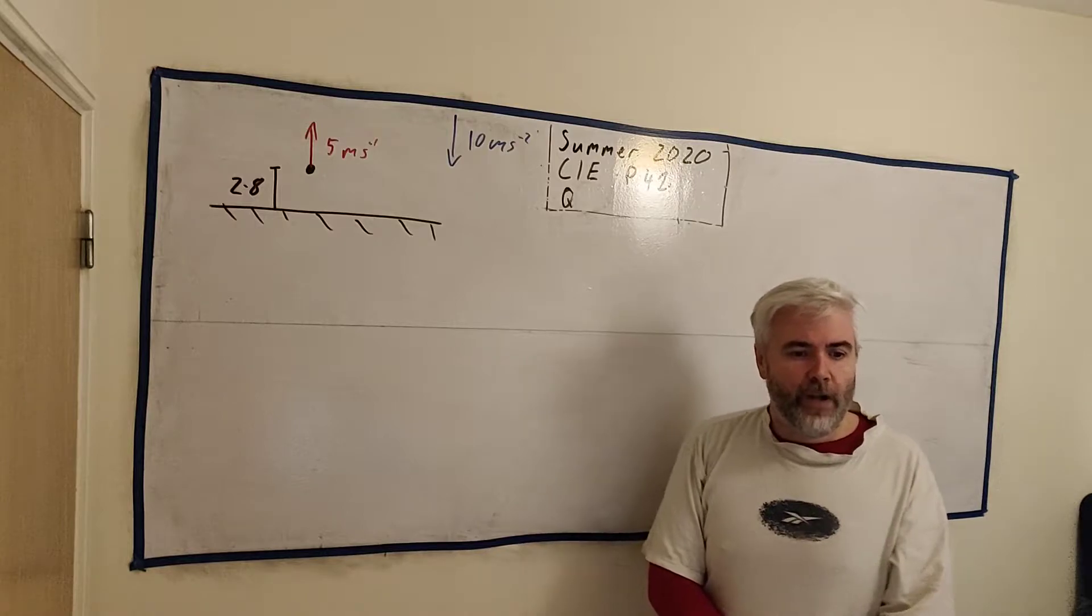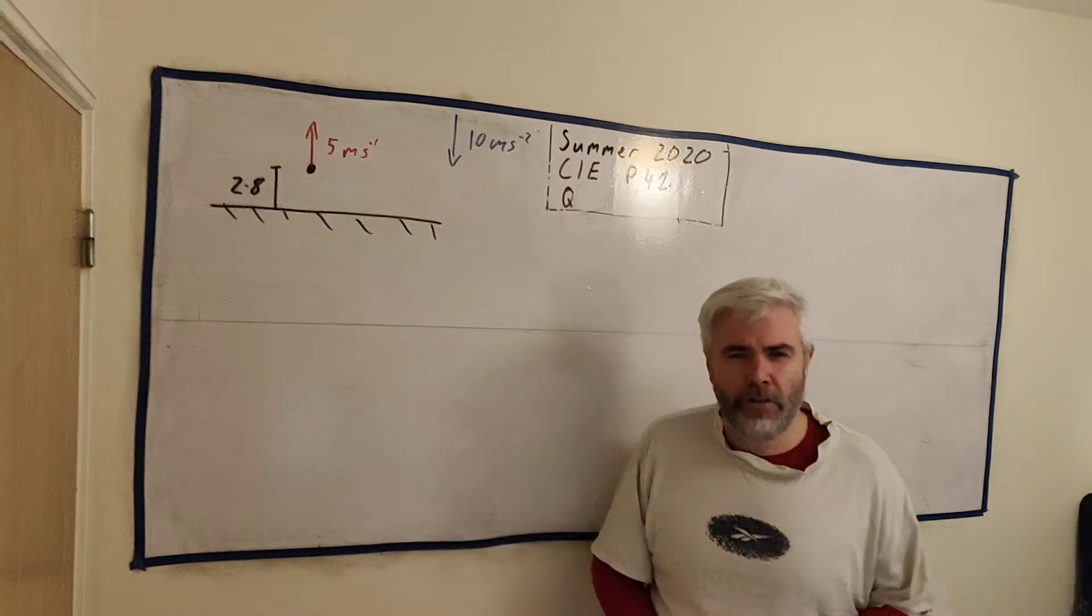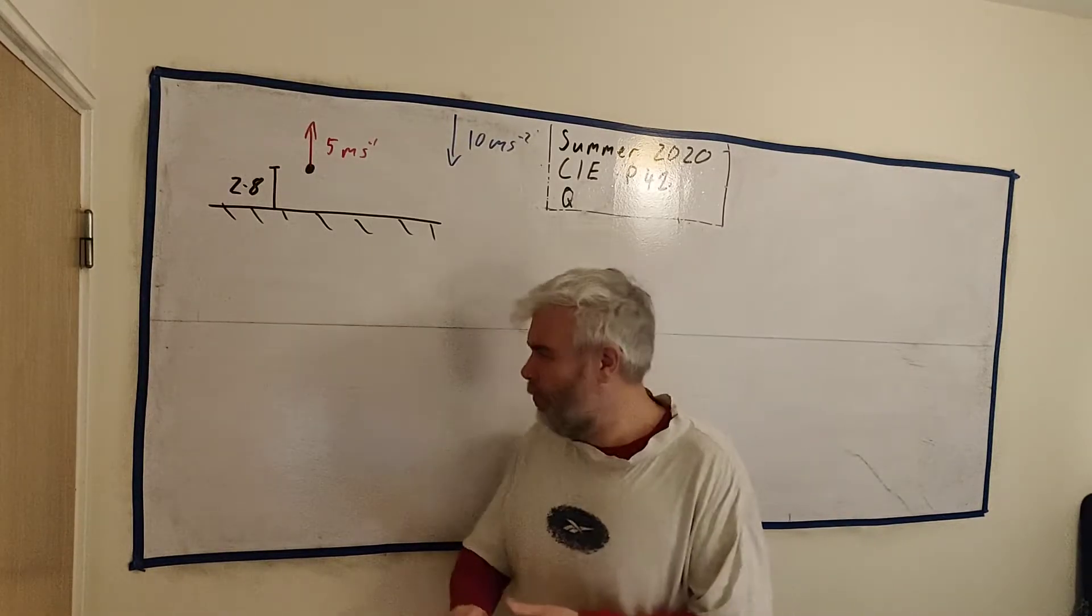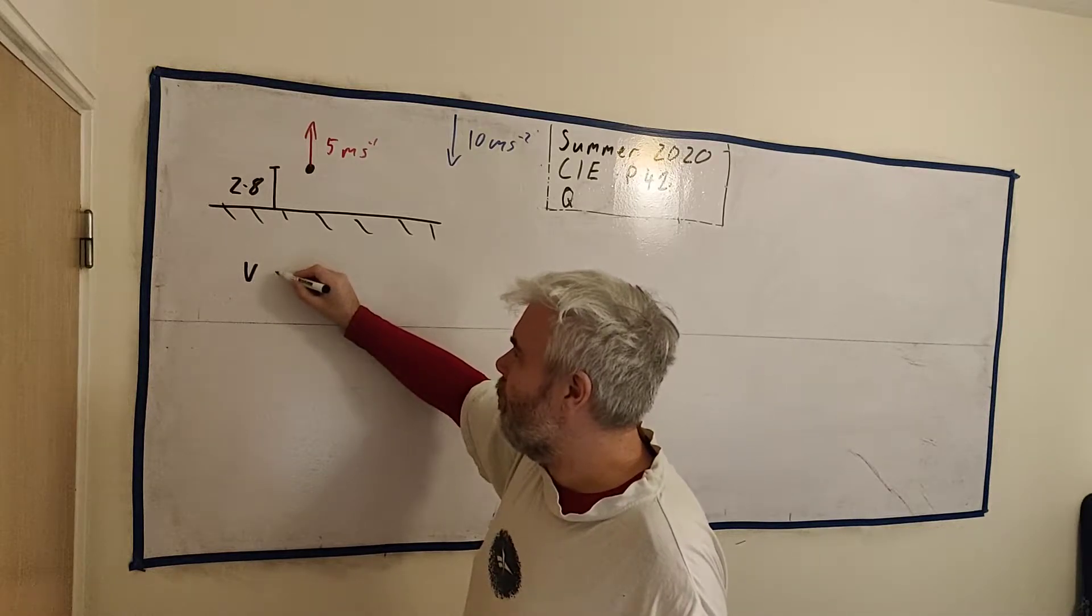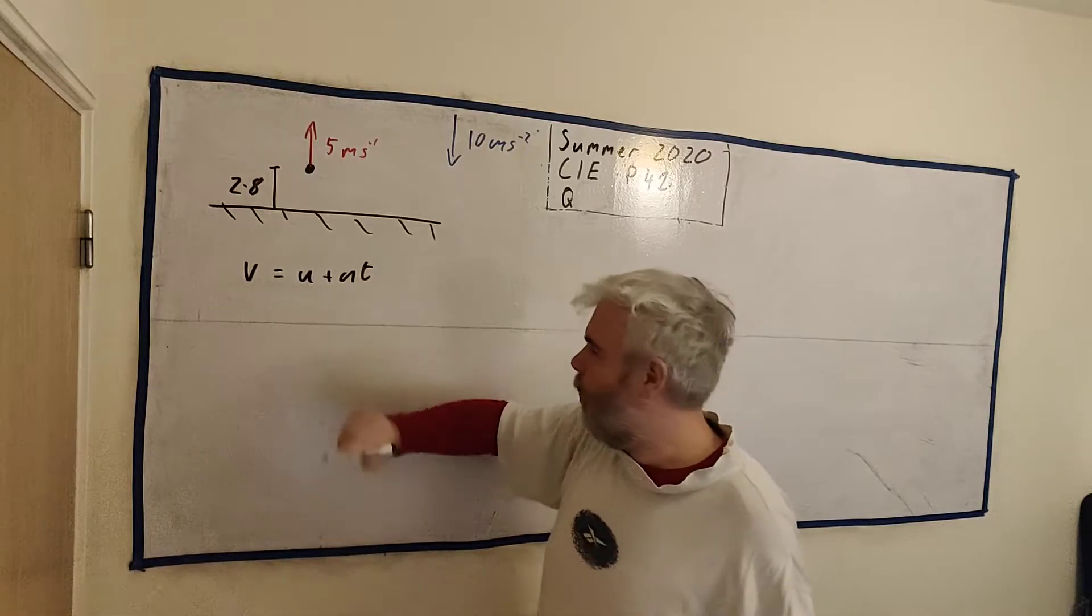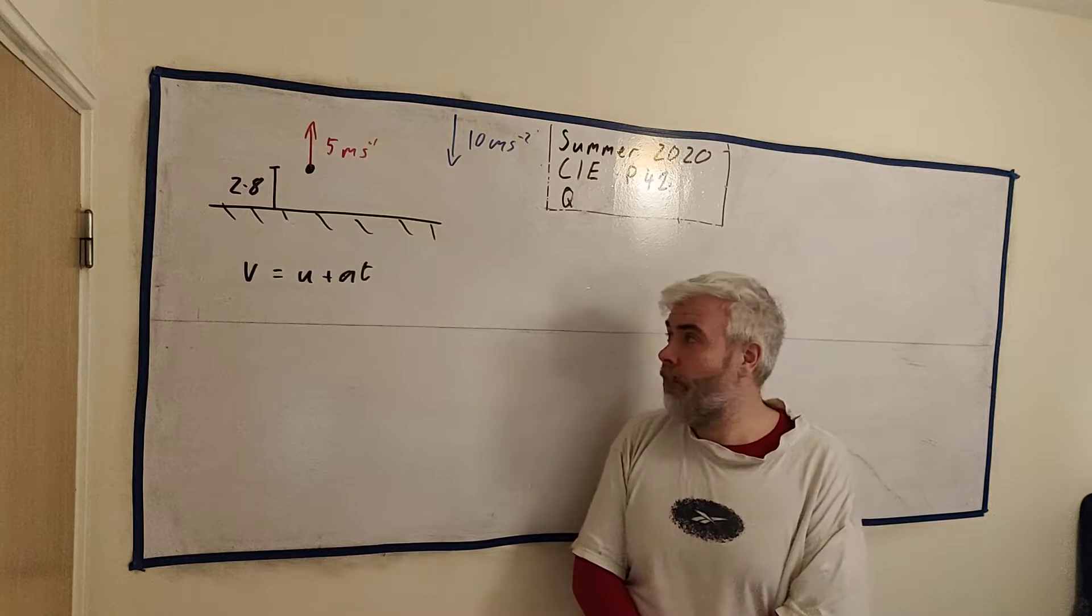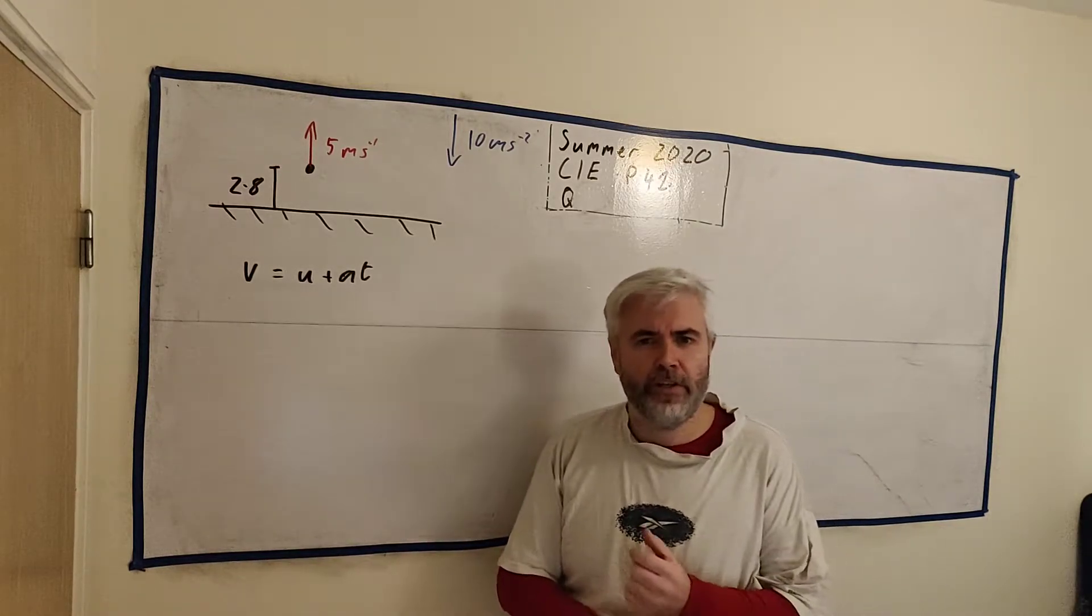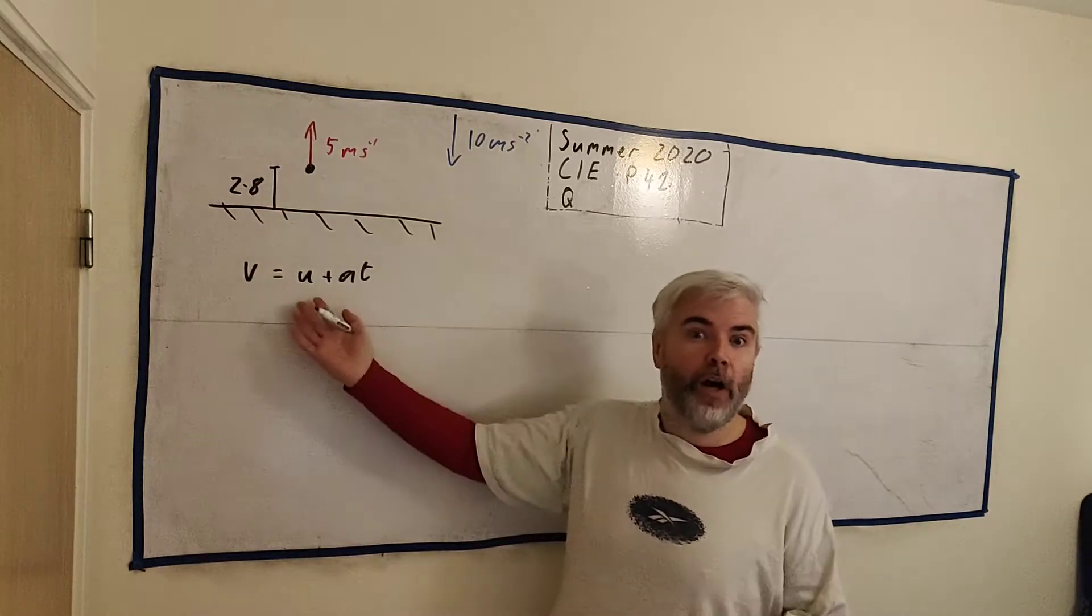The first question is find the greatest height above the ground that P reaches. Most times you'd see a question like this answered using the motion equations, the ones you're all very familiar with, like V equals U plus AT. I personally don't use them. I don't particularly like using them. I love teaching where they come from because how I'm going to do this question is using the basic way we derive these.